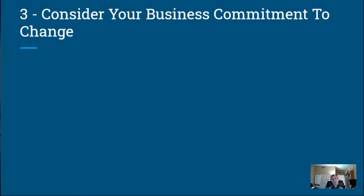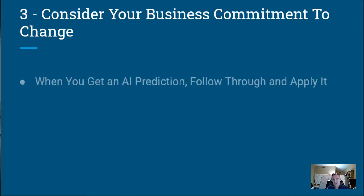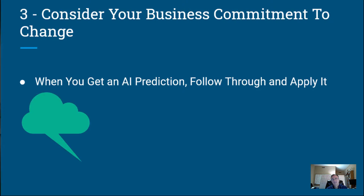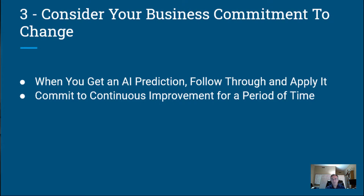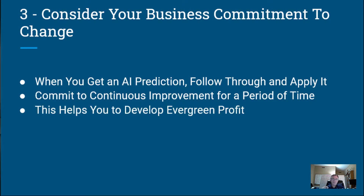The third area is around commitment — business commitment to change. This is mostly a mindset. It's when you get an AI prediction, follow through and apply it. Then we help you monitor the results and reapply AI again to get updated insights. This helps you to adjust the direction your business should go. It requires a commitment to continuous improvement over a period of time. In this way, it helps you to set the basis for establishing evergreen profit, which is really what we want to do for you — to bring consistency guided by AI insights over time to grow your business.